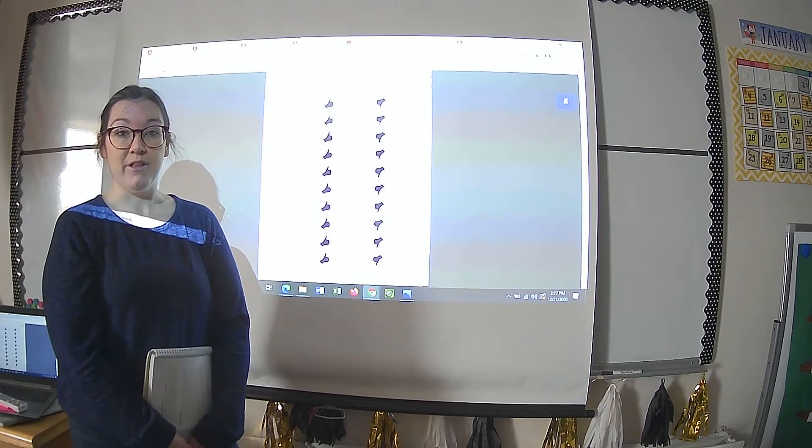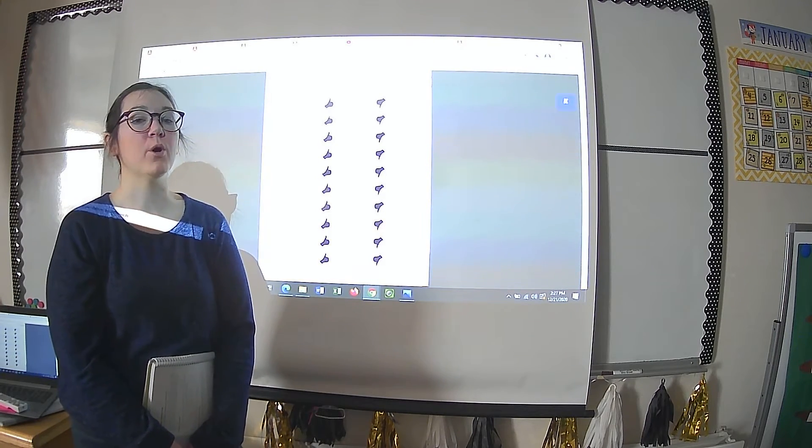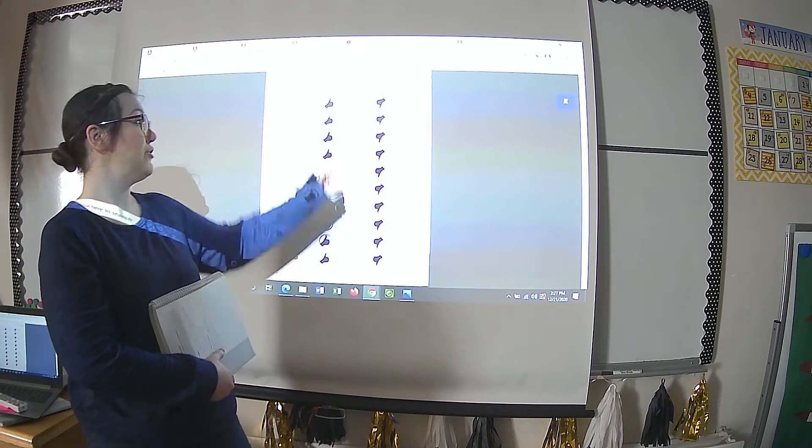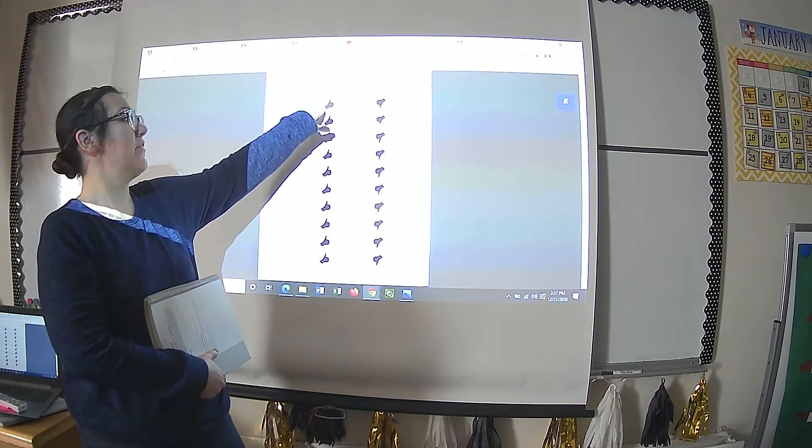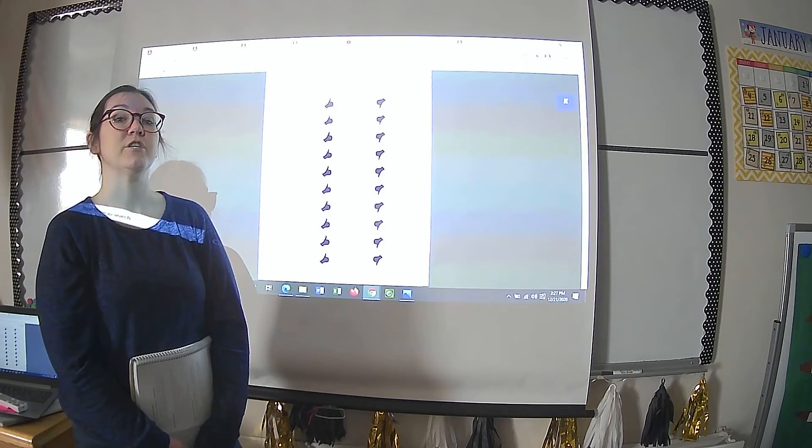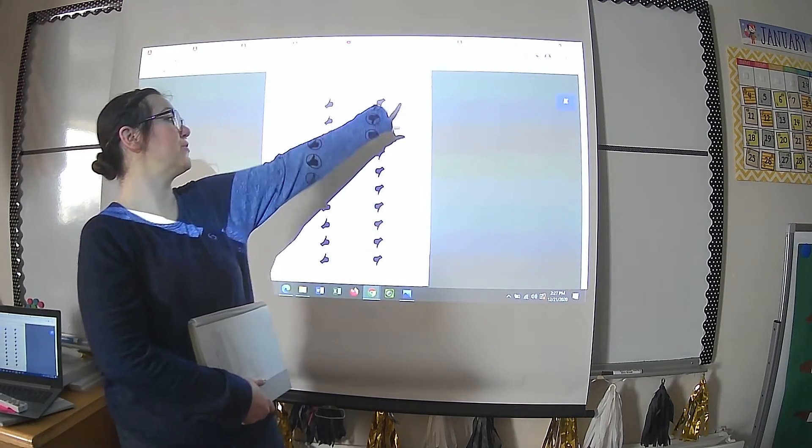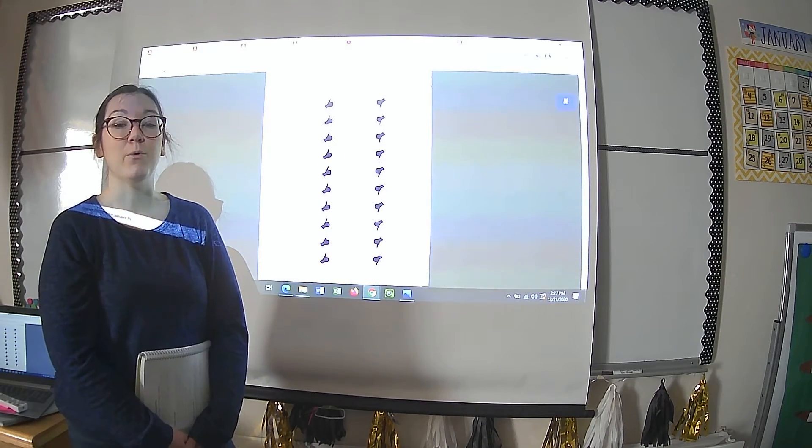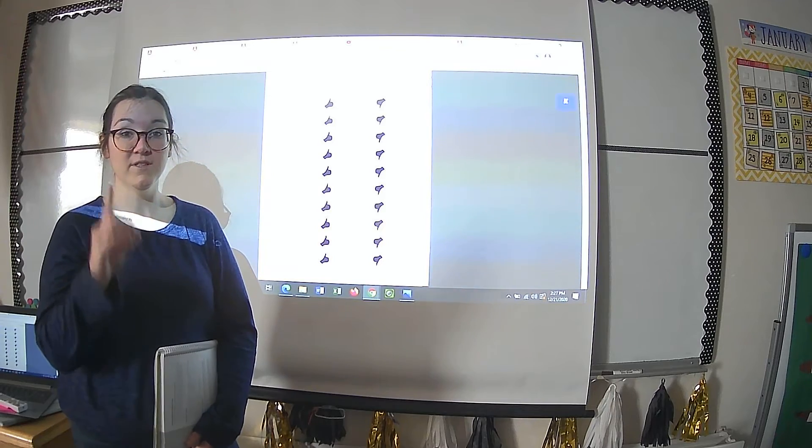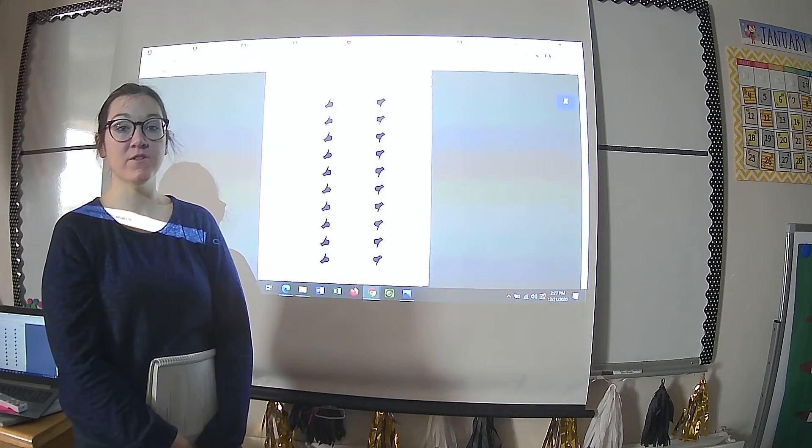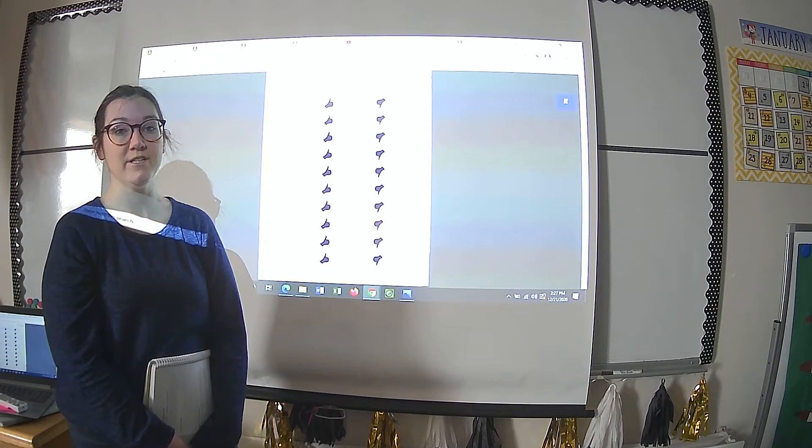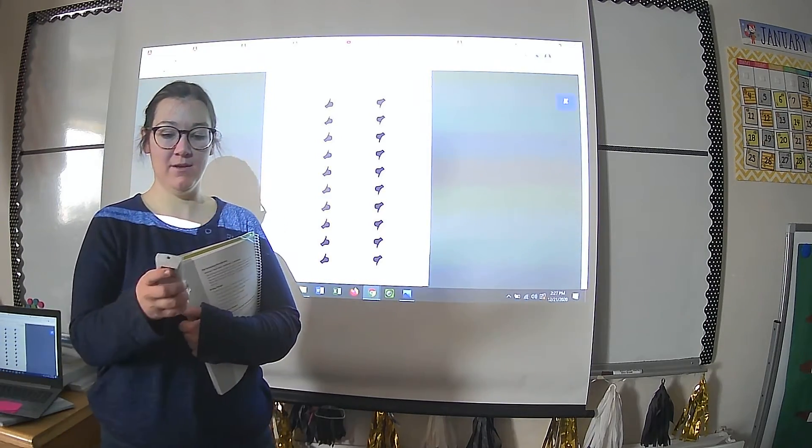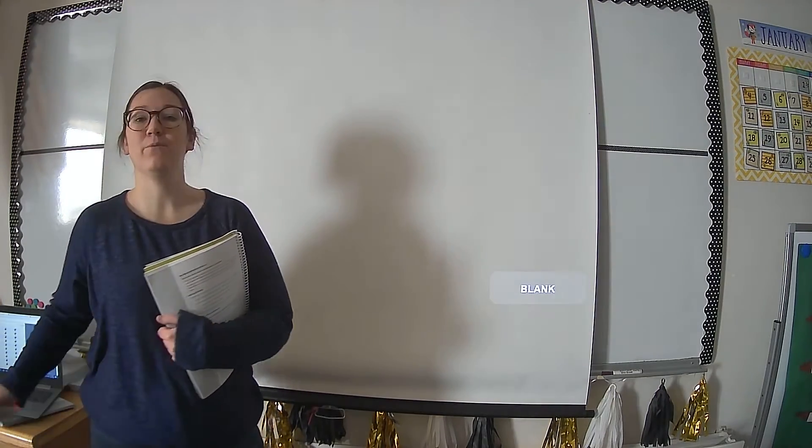I will read the vocabulary word and then ask you a question about it. If the answer to my question is yes, I want you to circle or fill in the thumbs up. If the answer to my question is no, I want you to circle or fill in the thumbs down. I will repeat each question only once. If you need to pause or rewind, you can do so at any point. I'm going to turn off our screen so it's not blinding me while I'm reading those questions.